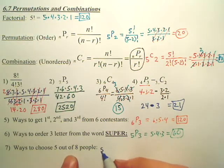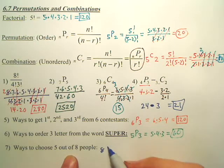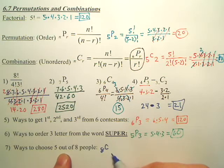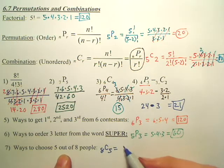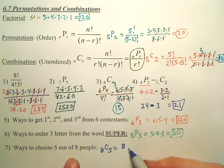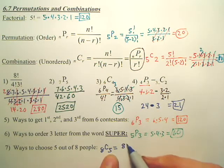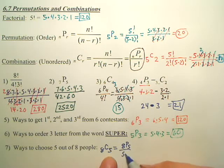So I have eight to choose from. C. And how many do I want? Five. How do we solve that? Well, it's going to be 8P5 over 5 factorial.